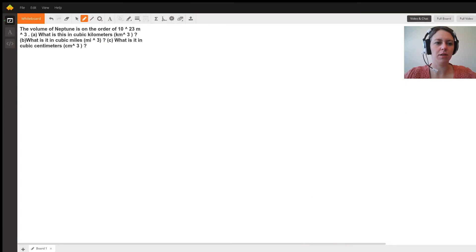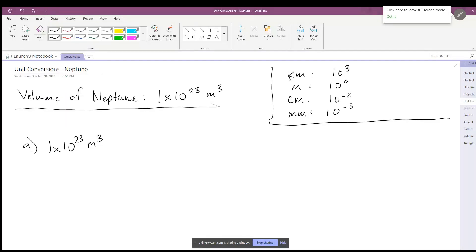Hi, I'm Lauren and today we're going to do some unit conversions about the volume of Neptune. I'm going to share my screen and we'll head on over to what I have set up so far. So we have the volume of Neptune is on the order of 1 times 10 to the 23rd meters cubed.